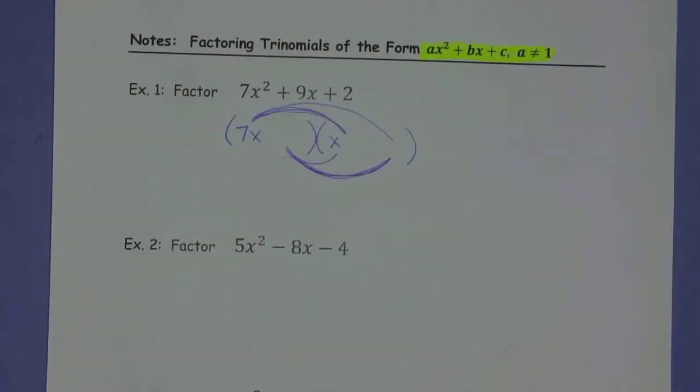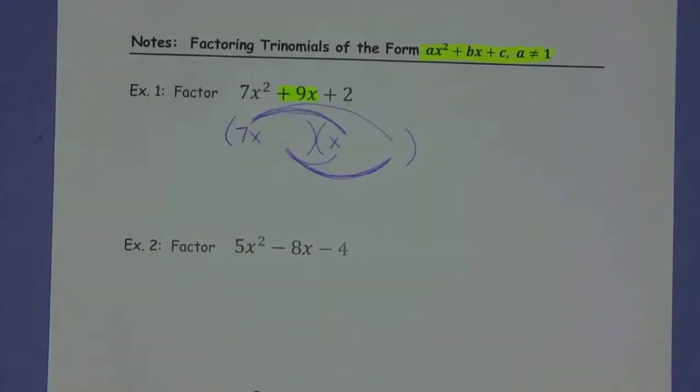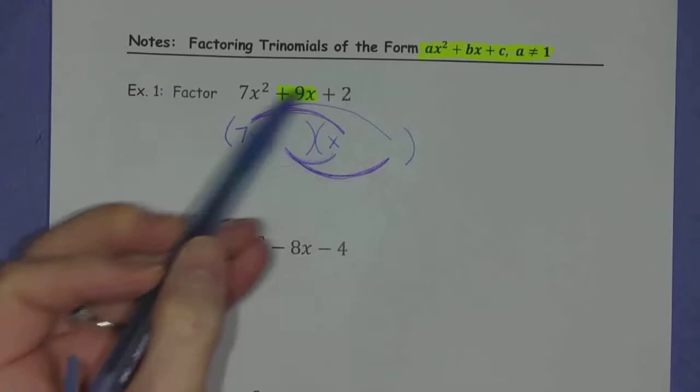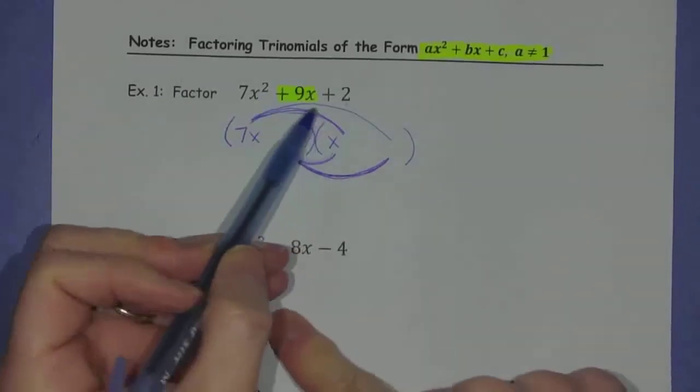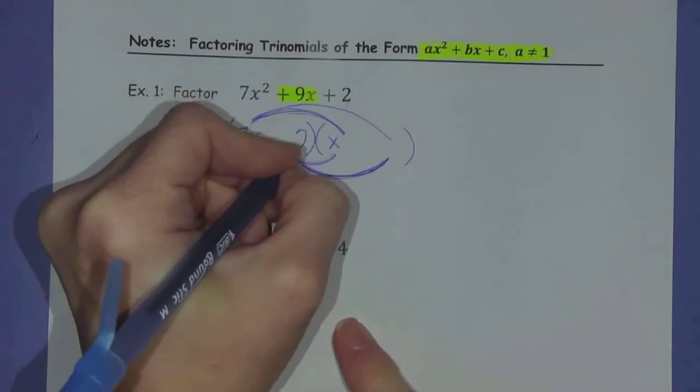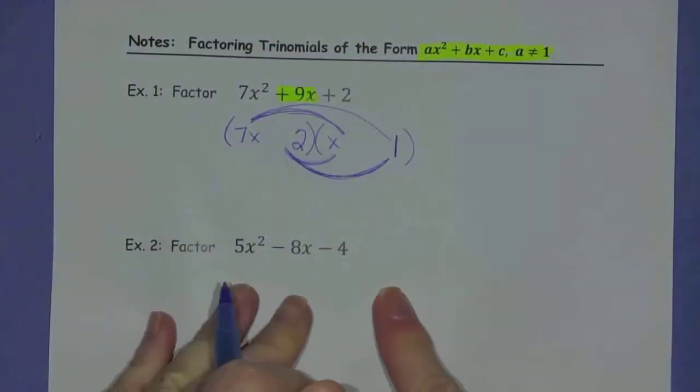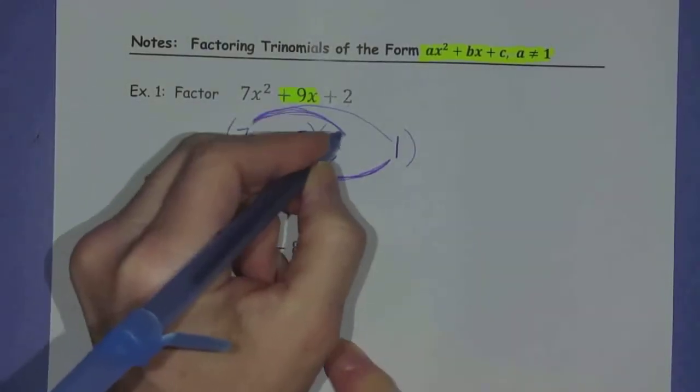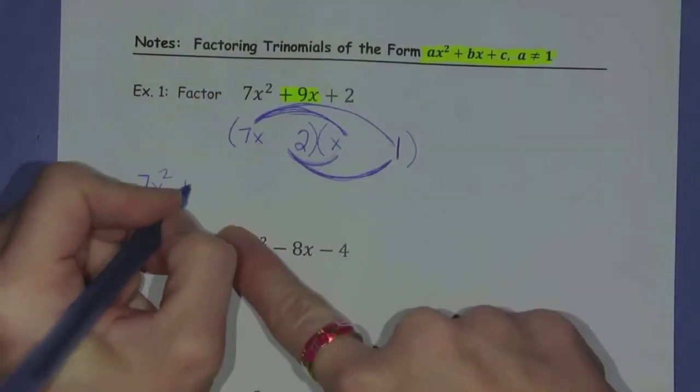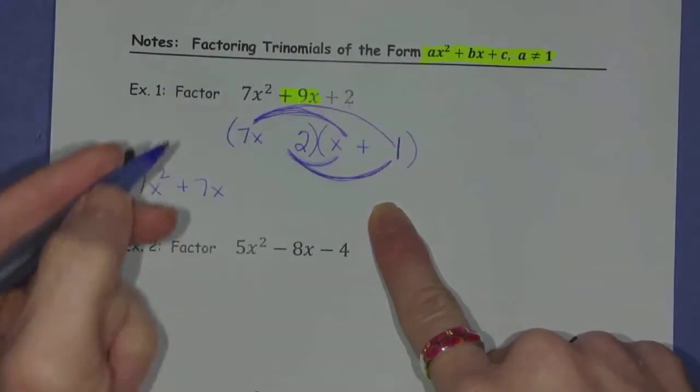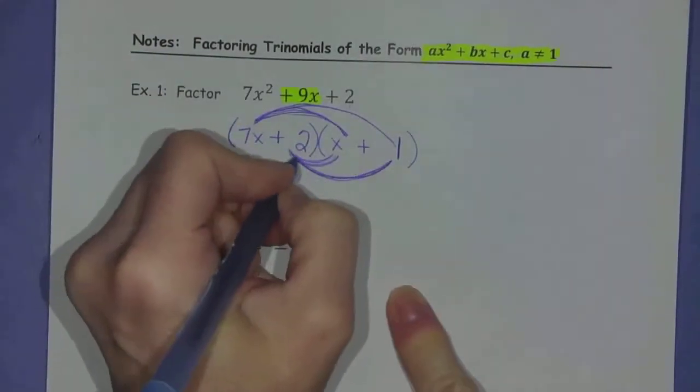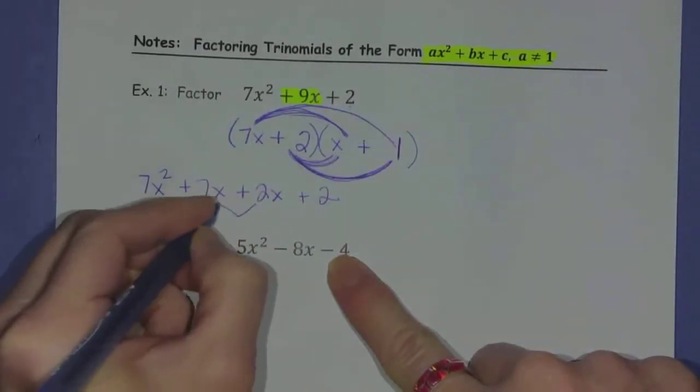But where do I position them? Well, I have to keep in mind that when I combine my like terms, which will be found by this product added to this product, I have to know that I'm going to end up with a 9x. So I have to strategically place the 2 and the 1 so that that will happen. So I'm going to go ahead and put the 2 here and the 1 here. So you can see that here's my 7x squared. Here is my 7x if I make that positive. Here is my 2x if I make this one positive. And then finally here is my 2. And there it is. There's my 9x.